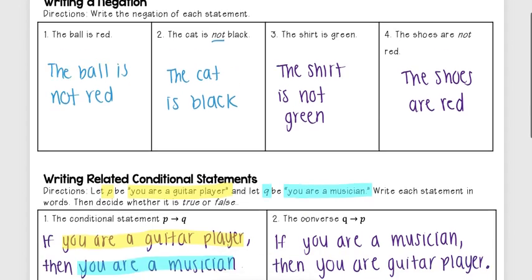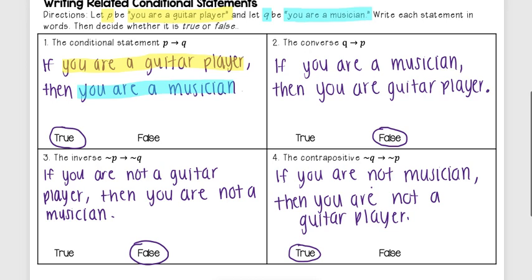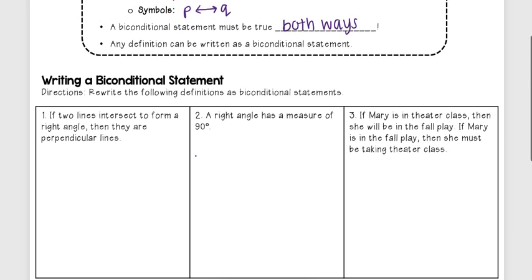From our previous example, this could not be written as a biconditional statement because it was true in one direction for my conditional, but when I went to the converse—if you are a musician then you are a guitar player—that wasn't true. So this would not be a biconditional.